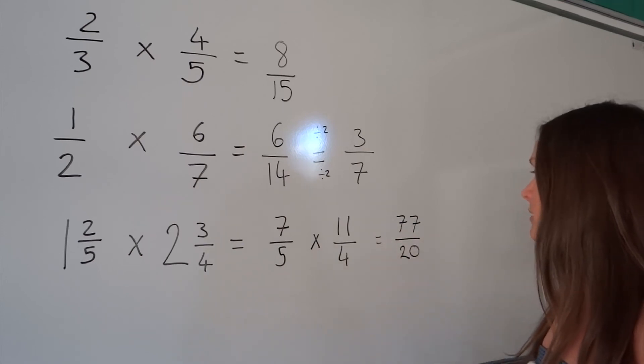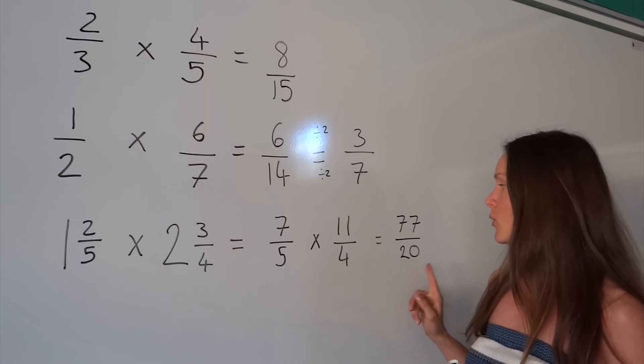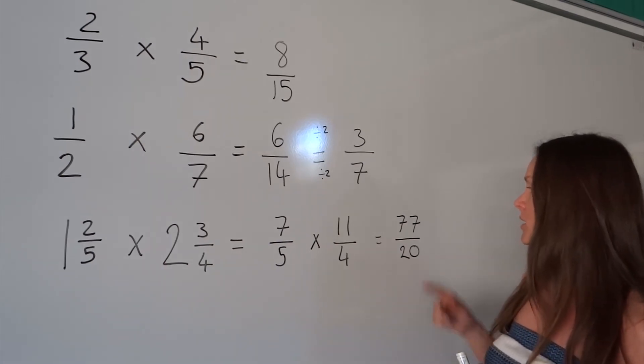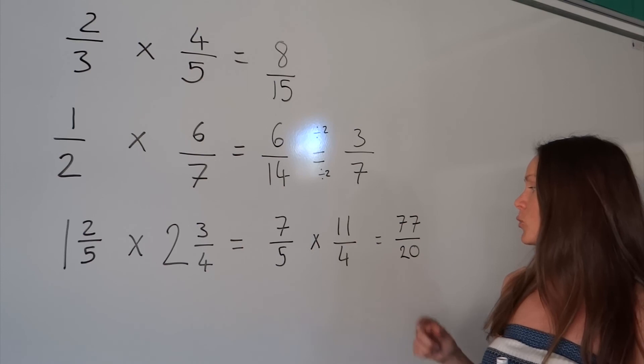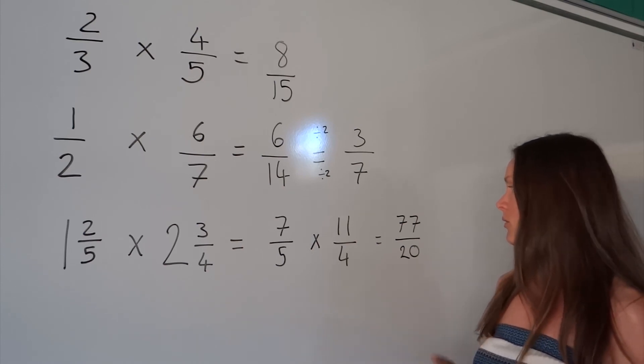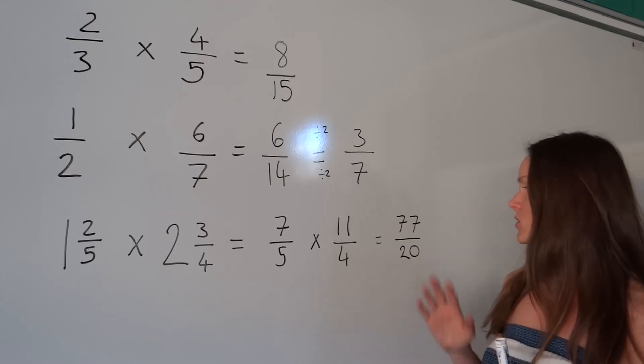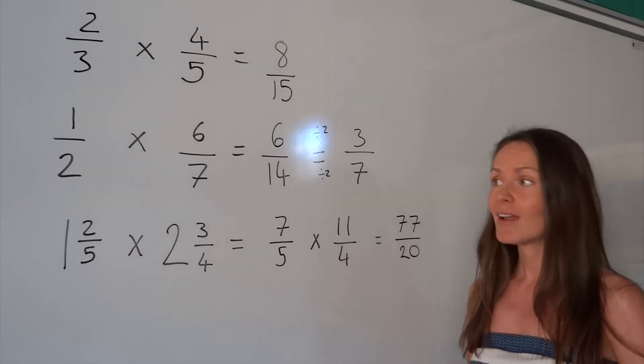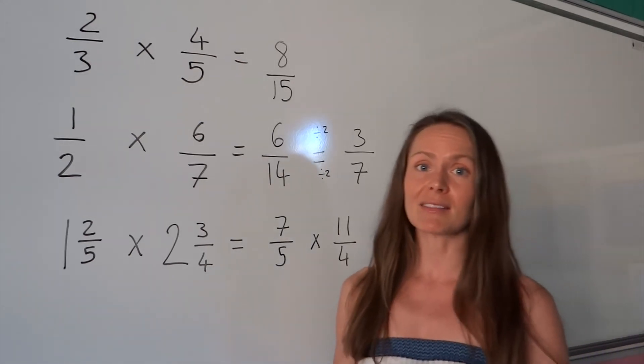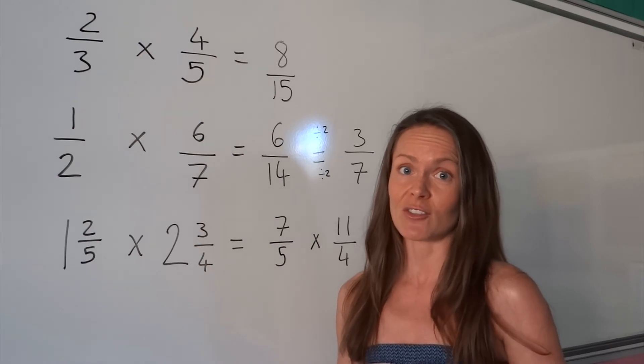OK, and this fraction, it's in its simplest form. We can't simplify this. There isn't a common factor. 77 is not divisible by 2, 4, 5, 20. So we just leave it like that. OK, so hopefully that's cleared up any questions you might have about multiplying fractions. Thank you.